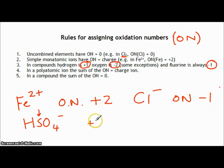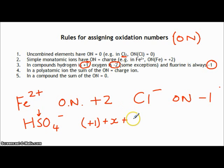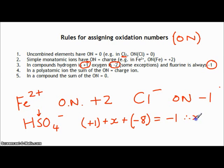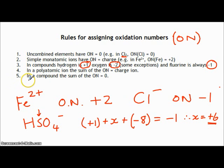We know hydrogen is plus one from rule three. We're looking for sulfur, so let's call it x. We've got four oxygens, and rule three tells us oxygen is always minus two, so four times minus two gives us minus eight. That must all equal the charge of the polyatomic ion, which is minus one. Solving: x equals plus six. So the oxidation number of sulfur in hydrogen sulfate is plus six.